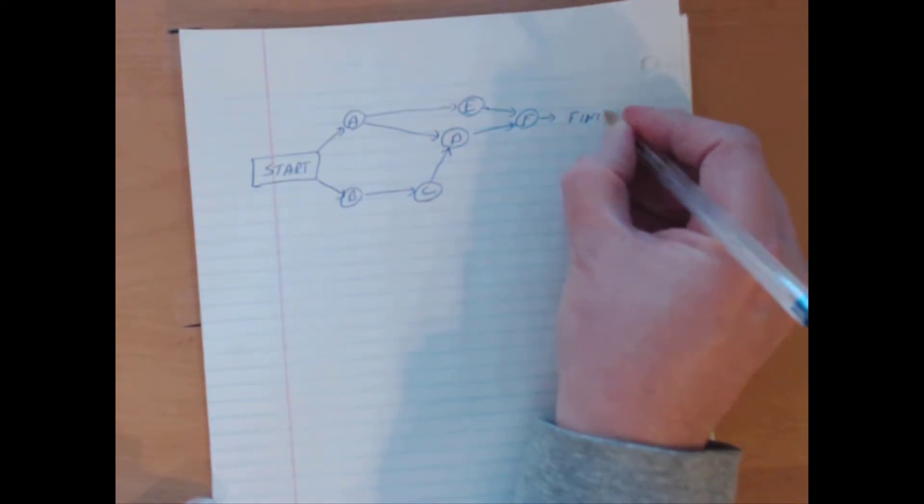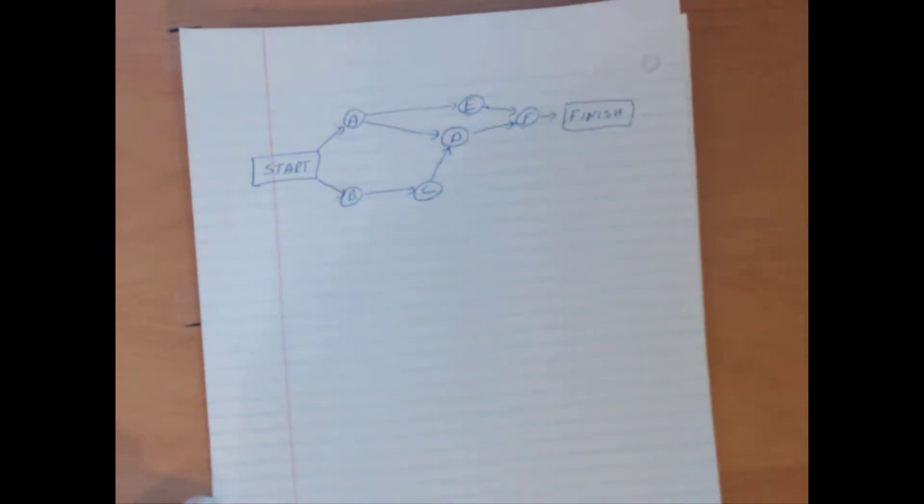And then we go from F to finish. Nothing left, finish, end, whatever you want. But we do want to note that there is a beginning and there is an end to this process. And so that is sketching out the network diagram. It is not too terribly hard.